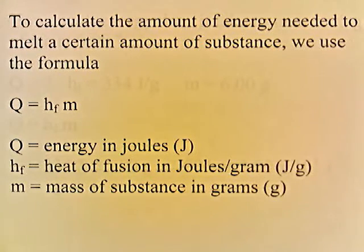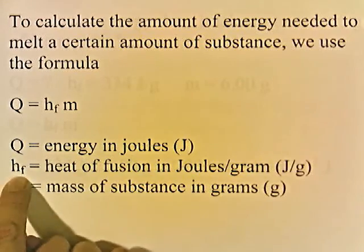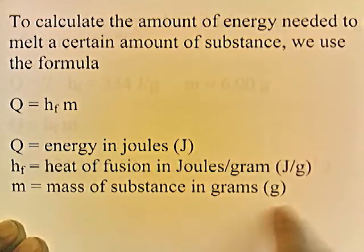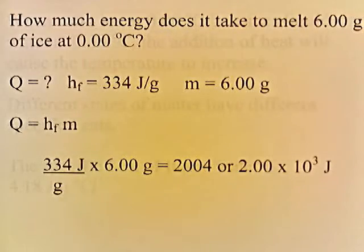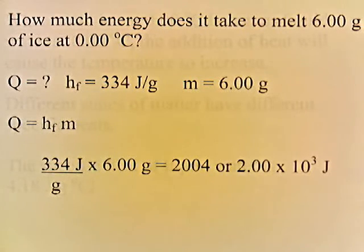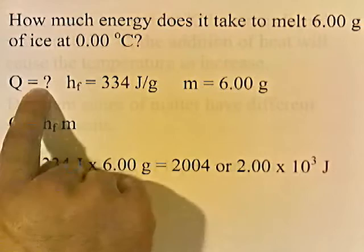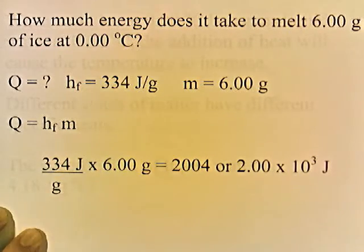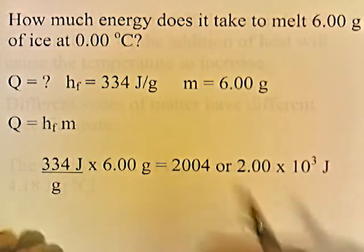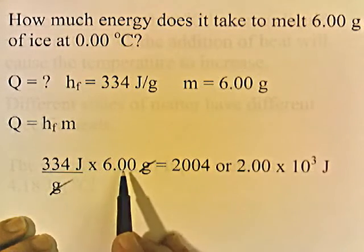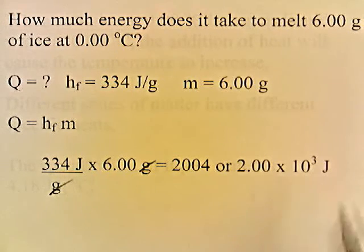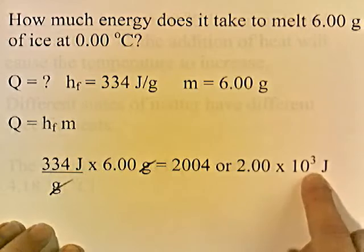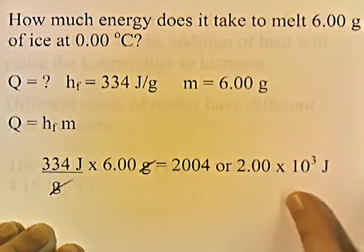To calculate the amount of energy needed to melt a certain amount of substance, we use the formula Q equals H_F times M. Q is the energy in joules, H sub F is the heat of fusion in joules per gram, and M is the mass in grams. How much energy does it take to melt 6 grams of ice at 0 degrees Celsius? H_F is 334 joules per gram, M is 6 grams, grams cancel, and 334 times 6 gives 2004, or 2.00 times 10 to the third joules. So this is how much energy you need to convert 6 grams of solid ice into liquid water.